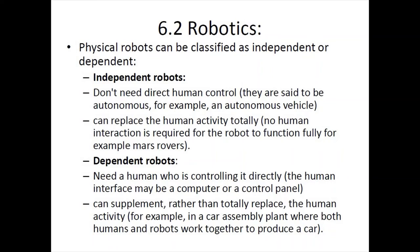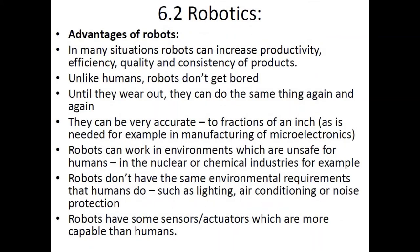Dependent robots always need a human controlling or guiding them directly with a control panel, joystick, or similar device. They supplement rather than totally replace human activity. For example, in a car assembly plant — such as those for Suzuki or Honda, or even a bike assembly plant — human workers and robots work together to produce a car, bicycle, or motorcycle. The process is not simply completely automated or robotic in nature.